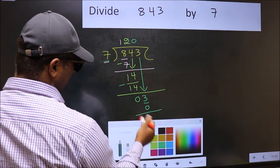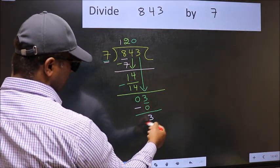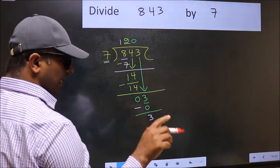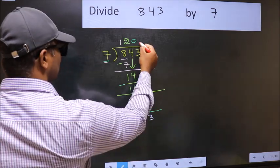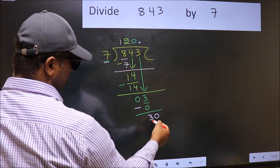Now you should subtract. 3 minus 0, 3. Over here, we did not bring any number down. And 3 is smaller than 7. So now you can put dot and take 0. So 30.